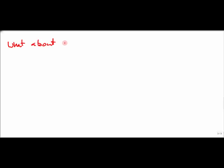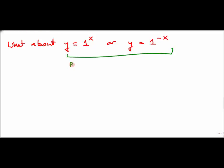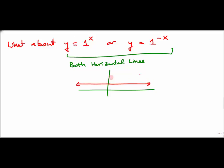What about y = 1^x or y = 1^(-x)? We know 1 to any power is just 1, so this is just a horizontal line — both graphs are horizontal lines. There's no exponential growth or decay; they're horizontal lines at y = 1. So 1 is the exception: any other base will show exponential growth or decay depending on whether the exponent is negative, but when the base is 1, you have a constant function — neither increasing nor decreasing.